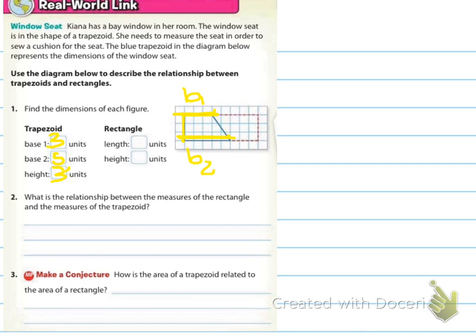And then the height is, remember that we're going perpendicular, a 90 degree angle, one, two, three units tall. Now the rectangle, for the rectangle, we have a length of one, two, three, four, five, six, seven, eight.